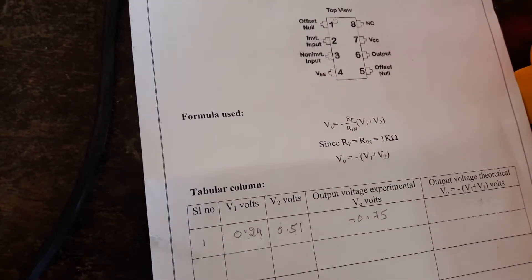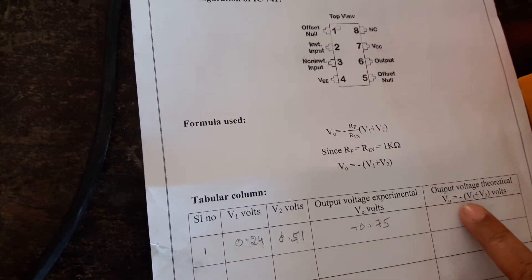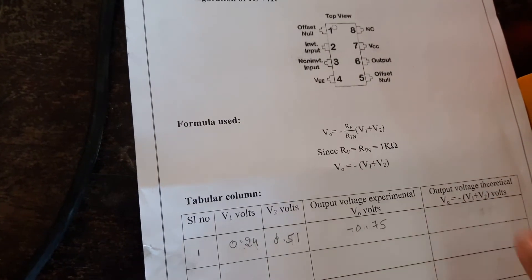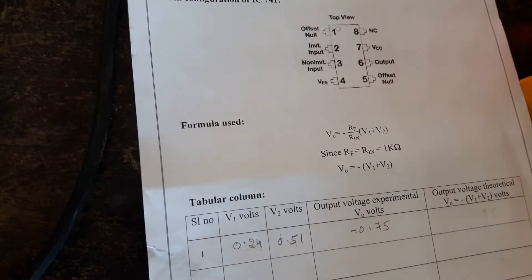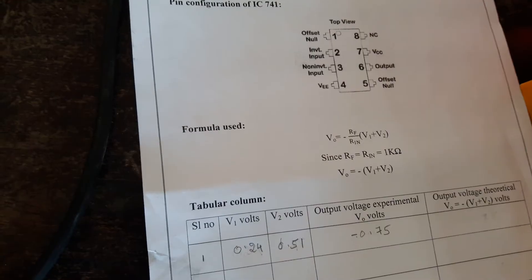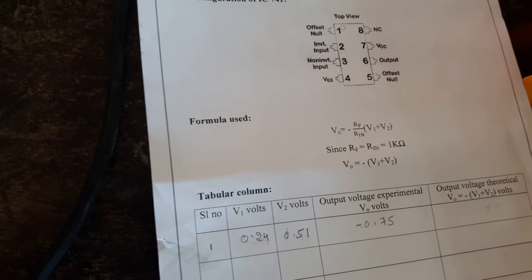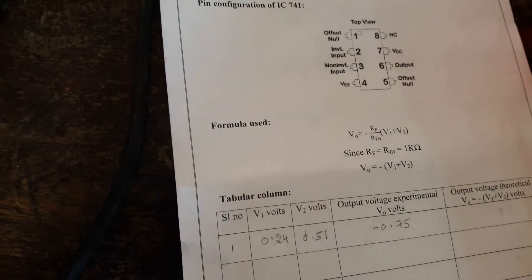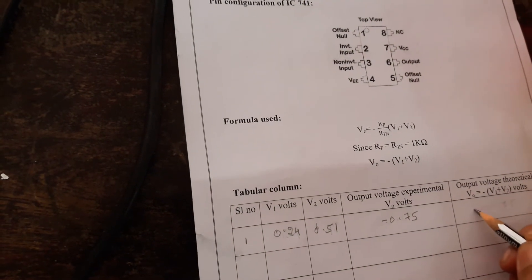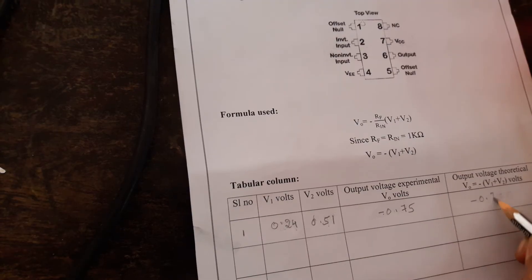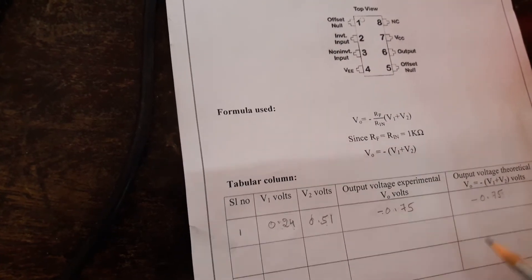The theoretical formula is V0 equals minus of V1 plus V2. So I will sum these two values, 0.24 plus 0.51 is 0.75, again with a negative sign. The theoretical value is compared with the experimental value.